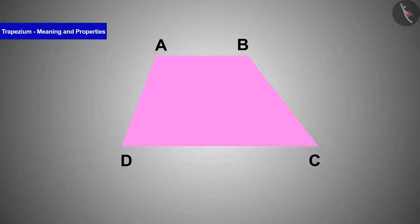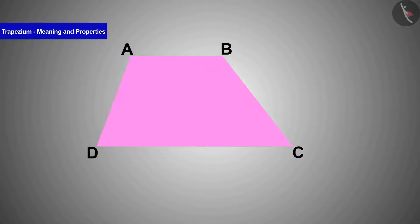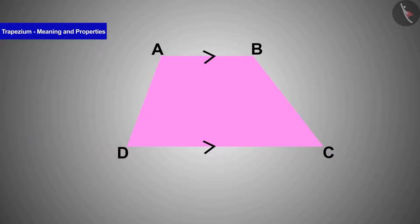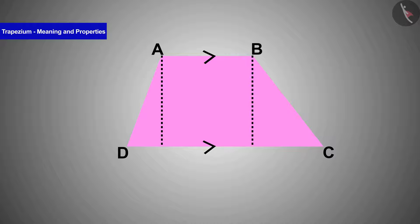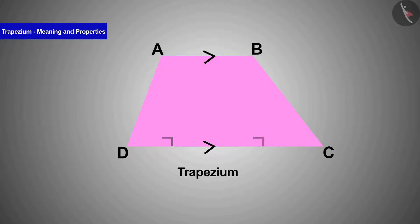You will find that a pair of sides in this figure are parallel — arrow marks indicate parallel lines. Drawing perpendiculars from the vertices of the shorter parallel side, we see these perpendiculars are of equal length. This is why this shape is called a trapezium. One pair of sides is parallel and the other pair is non-parallel.